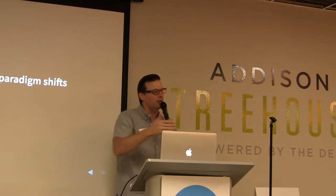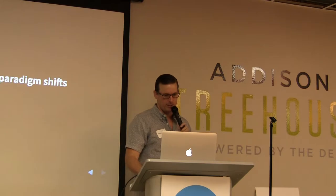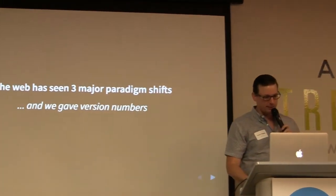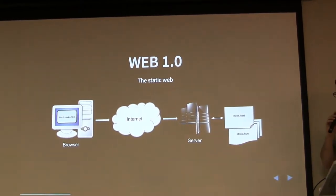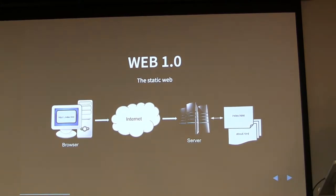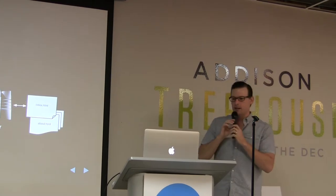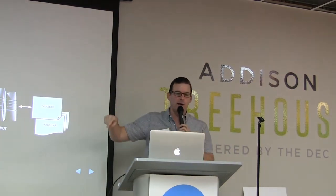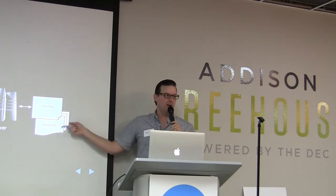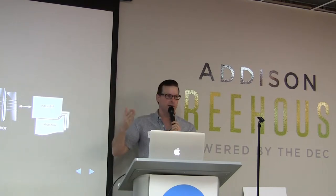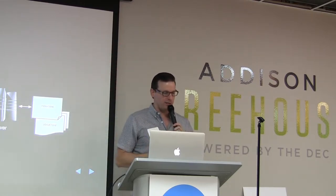There have been three major paradigm shifts in the history of the web, and being developers, we love giving them version numbers. The first we call Web 1.0 — the static web. Whenever the web was first introduced, you had the browser, and every time you went to a website like Geocities.com, that request would hit a server. The server would look in its file directory, find index.html, and send that HTML file to the user. It would render in the browser and they would see the webpage.